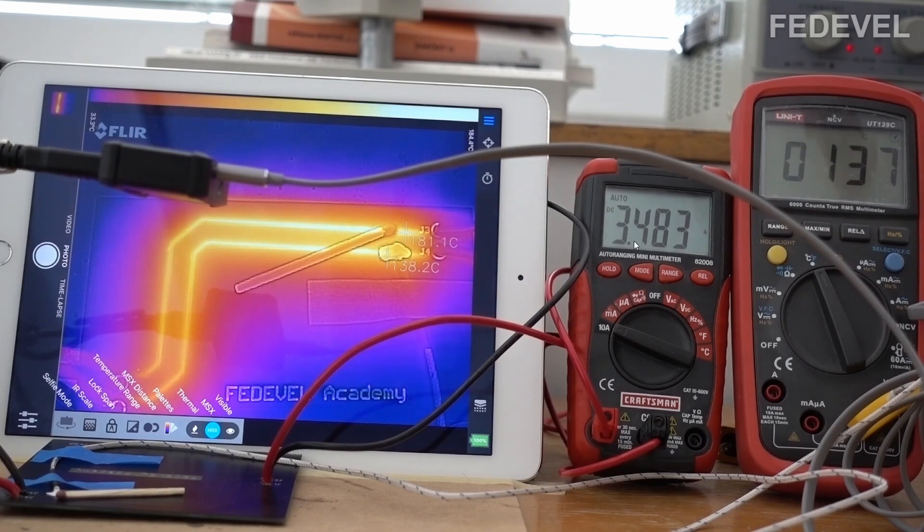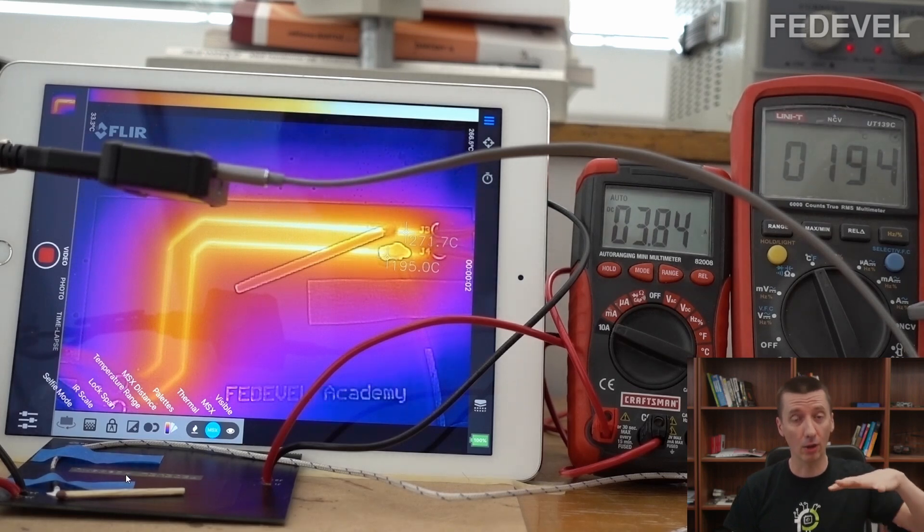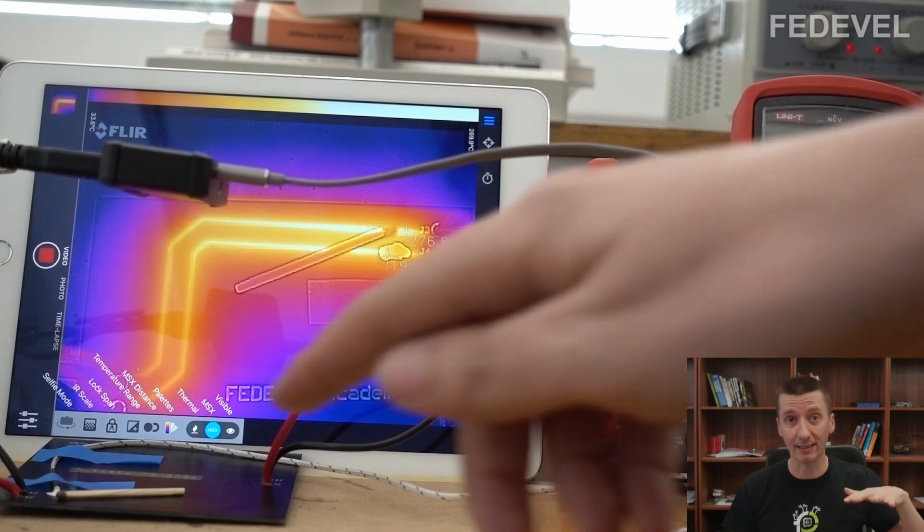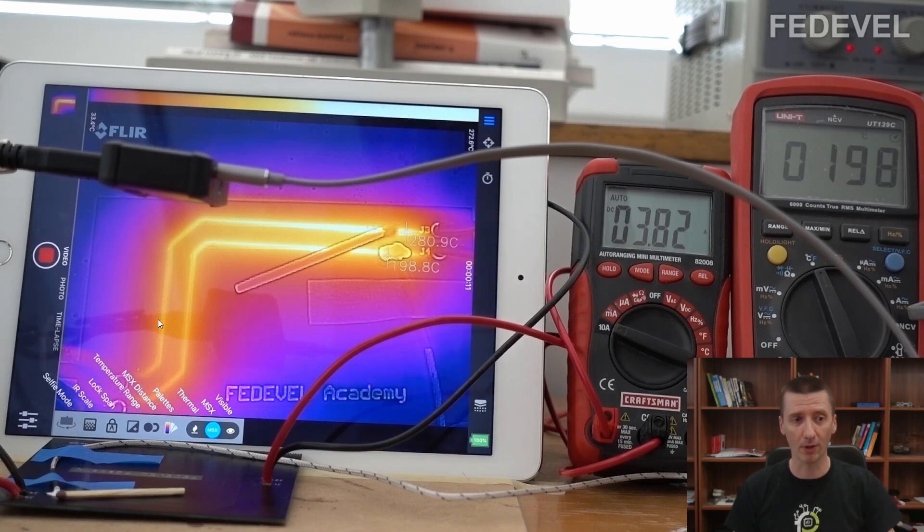Okay. And let's increase the current again. By the way, I use black color on the PCB because I wanted to not have any reflective surface. Black color was really good for accurate reading by the thermal camera.